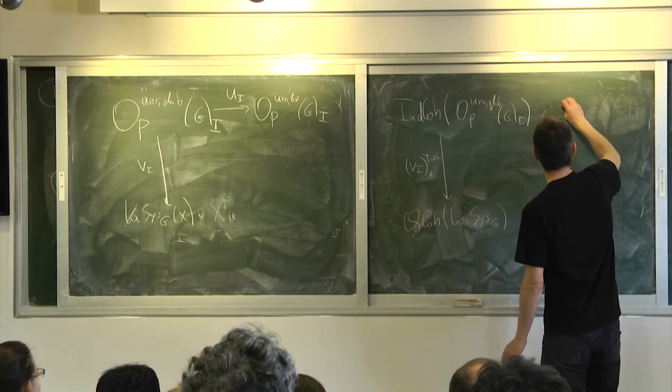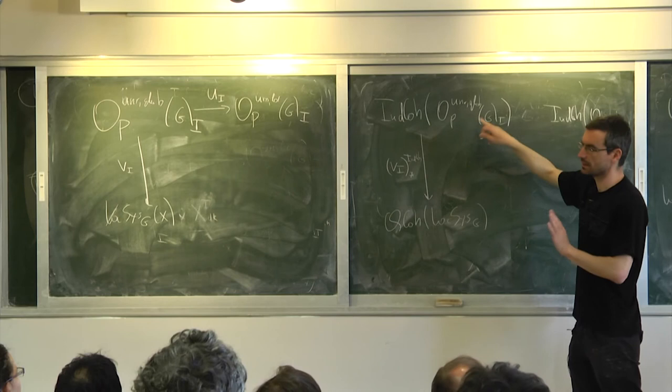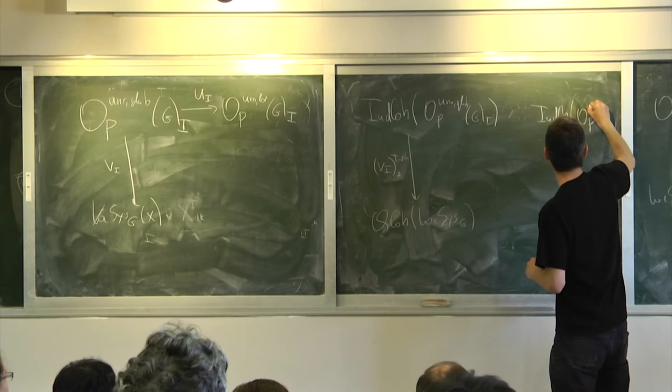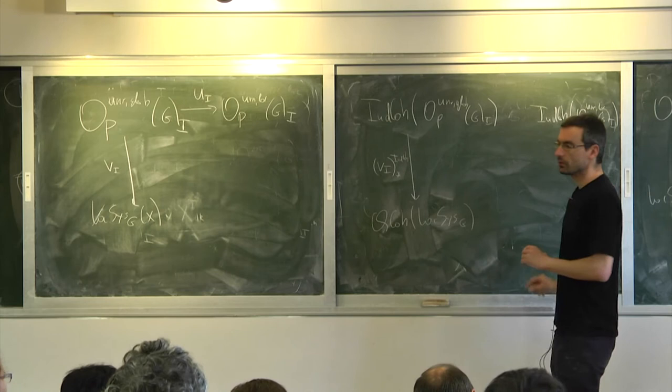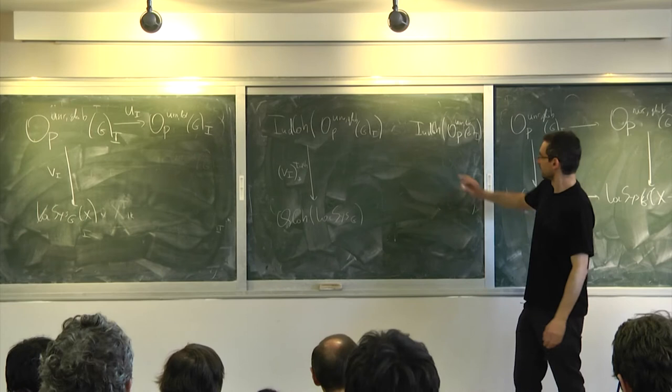Now I want to say IndCo of the local guys. In here we didn't have a problem with IndCo because this is slightly stacky but actually not — it's an ind-scheme of finite type, so this is well-defined. But now we have this unramified local and I want to say IndCo. This is not of finite type; it looks like jets into something. So what do I mean by this?